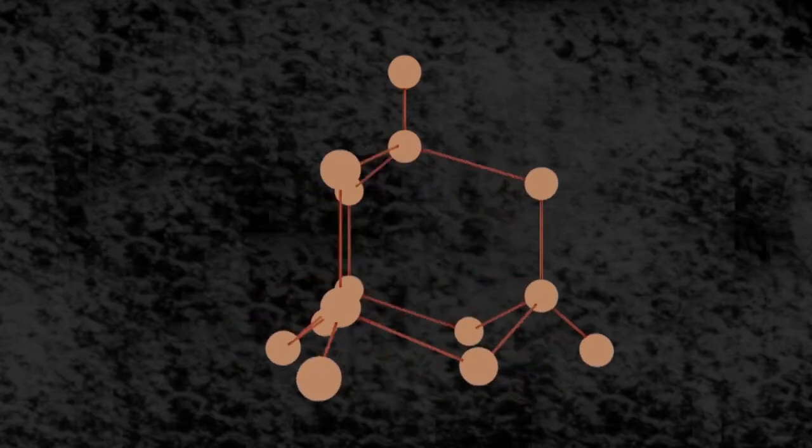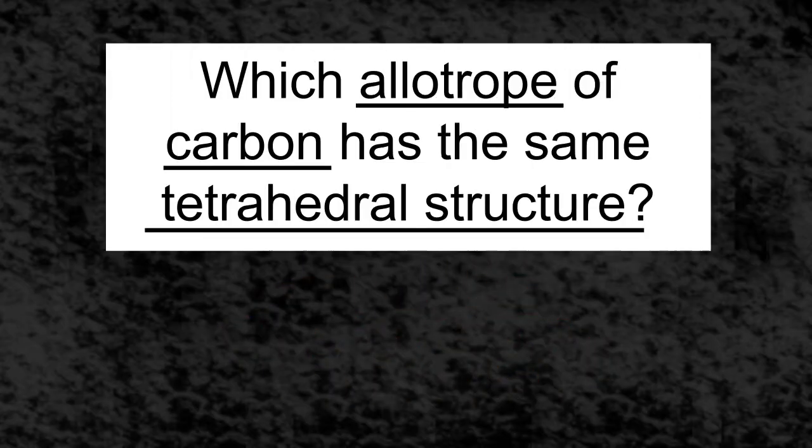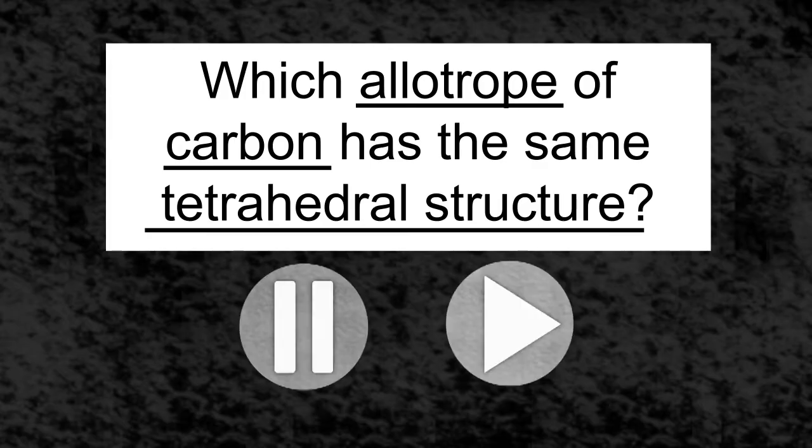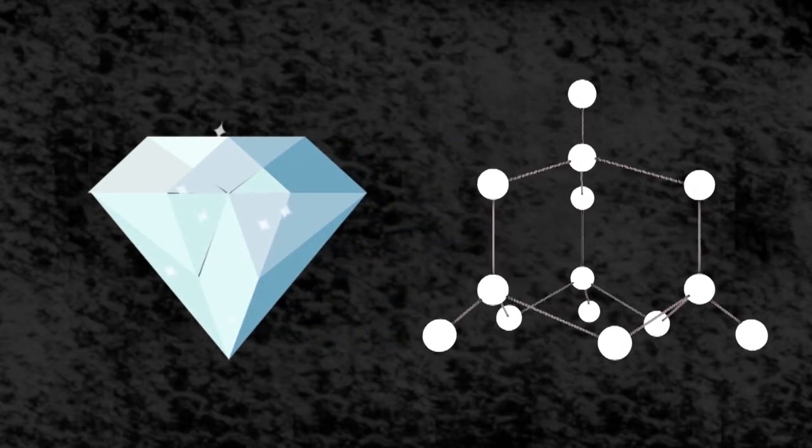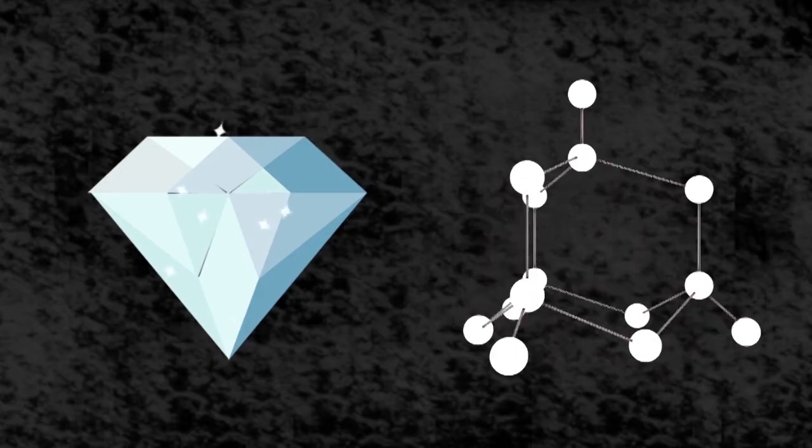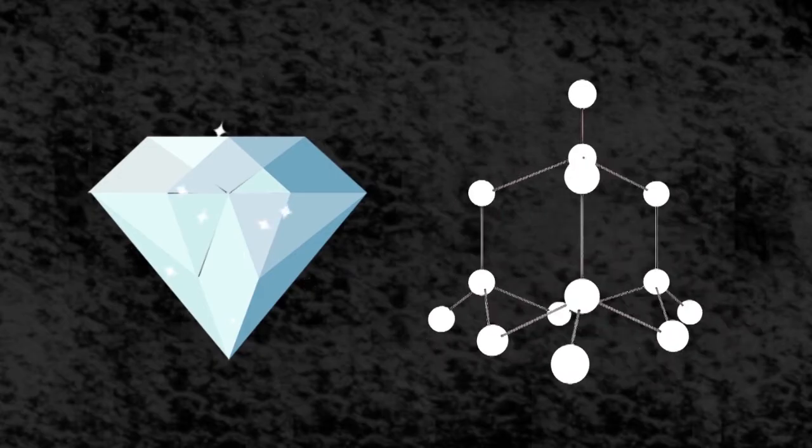Here is a challenge for you. Which allotrope of carbon has the same tetrahedral structure? Pause, think, and continue when ready. The answer is diamond. Each carbon atom is covalently bound to four other carbon atoms in the same tetrahedral arrangement.